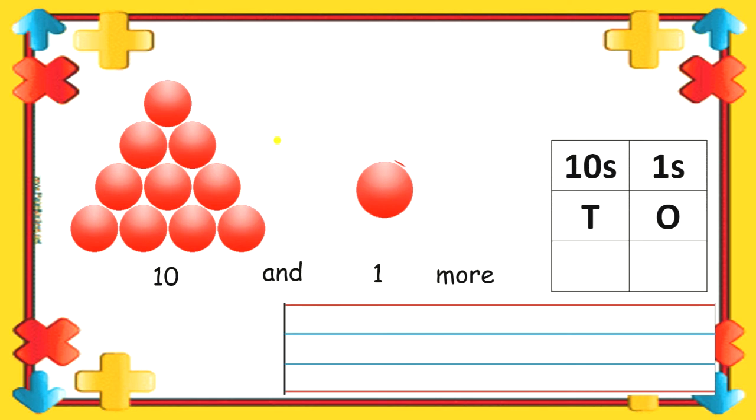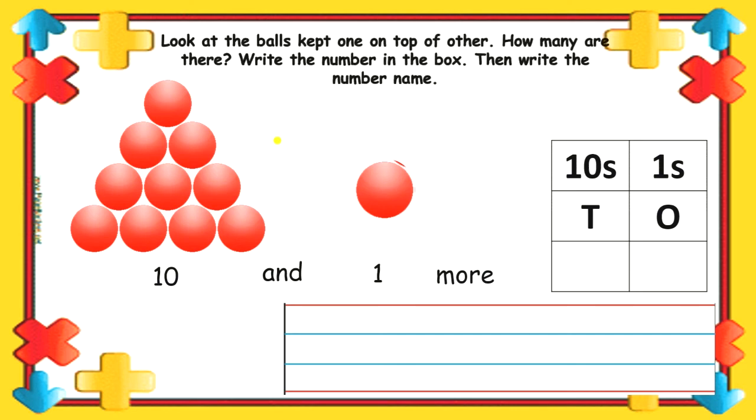Now, let us do one activity. Look at the balls kept one on top of other. How many are there? Write the number in the box. Then, write the number name. Now, let us see the first picture. These are 10 balls. How many balls? 10 balls.